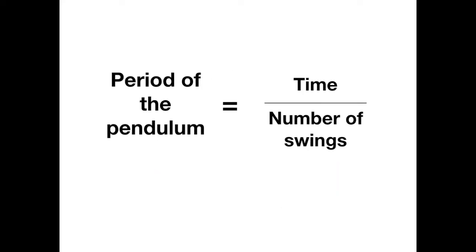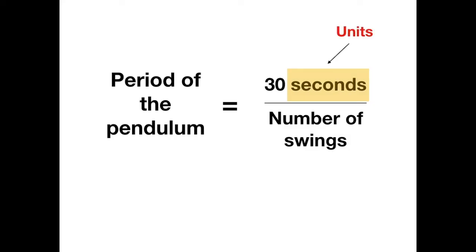To calculate the period of the pendulum in the lab, you took the time that the pendulum was swinging divided by the number of swings. For the lab that you completed, the time we used was 30 seconds. In 30 seconds, you counted the number of swings, and then did 30 divided by the number of swings, and that told you the time it took for one complete pendulum swing, or the period of a pendulum. The unit for the period of a pendulum is going to be seconds, because it is the time that it takes for the pendulum to complete one full swing.